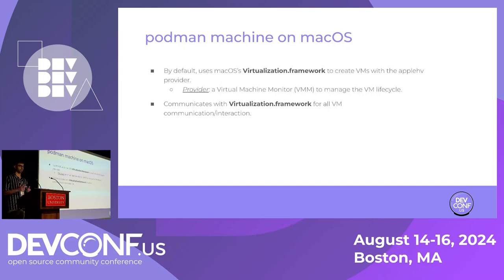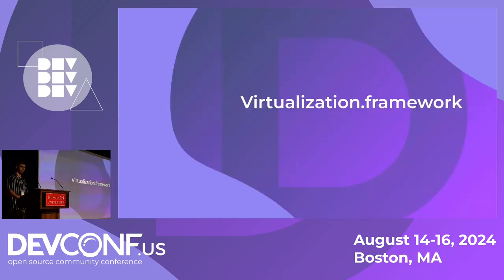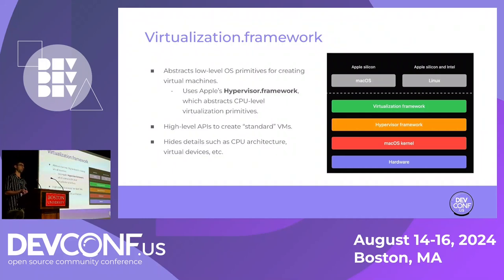In Podman machine, there's this notion of a provider, which is really just a virtual machine monitor or VMM, used to manage the lifecycle of your virtual machine. By default on macOS, Podman uses the Apple hypervisor provider, which uses Apple's provided virtualization framework. Podman communicates with this framework for all of its VM communication and interaction. The virtualization framework is really just an abstraction for some low-level OS primitives typically used when creating virtual machines. It also uses another framework provided by Apple called the hypervisor framework, which deals with even more low-level abstractions like CPU and memory, but what you get from the virtualization framework is a high-level API that hides details about CPU architecture and virtual devices.